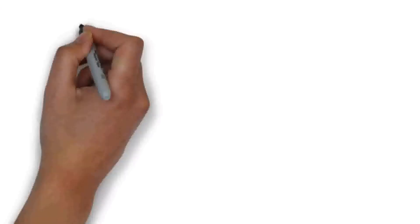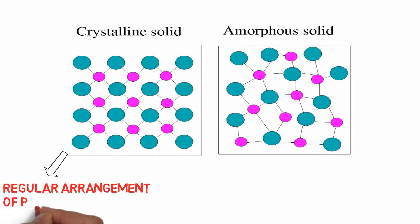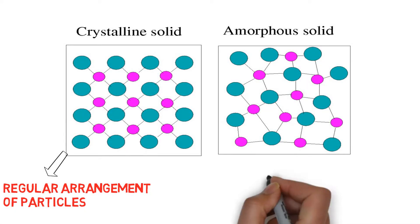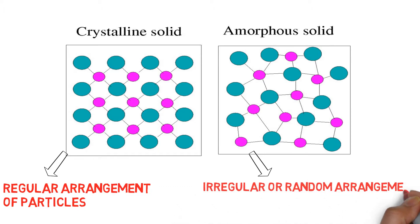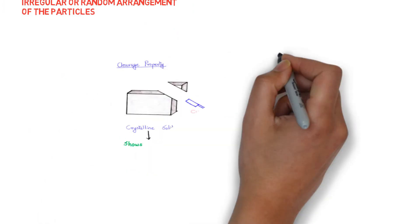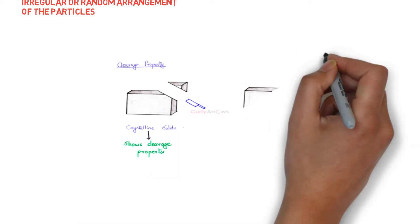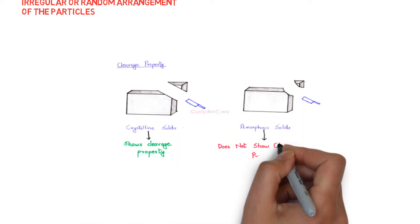You can see the figure of crystalline and amorphous solids. In crystalline solids there is a regular arrangement of particles, whereas in amorphous solids there is an irregular or random arrangement of particles. You can also see the cleavage property: when we cut with a knife, crystalline solids make a smooth or plain cut, whereas amorphous solids do not.